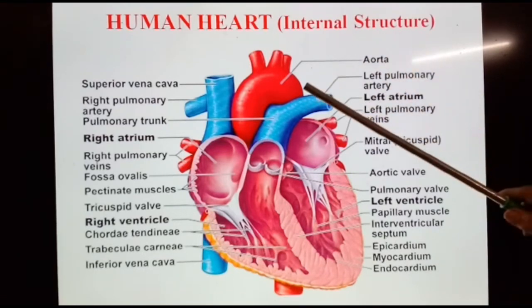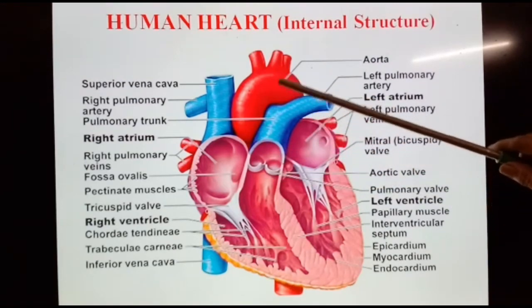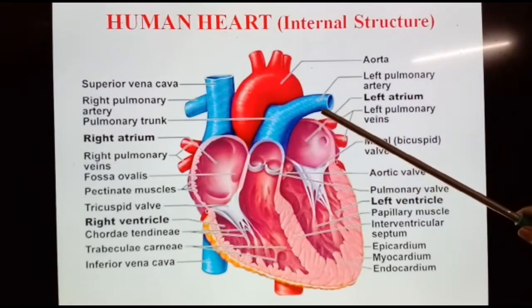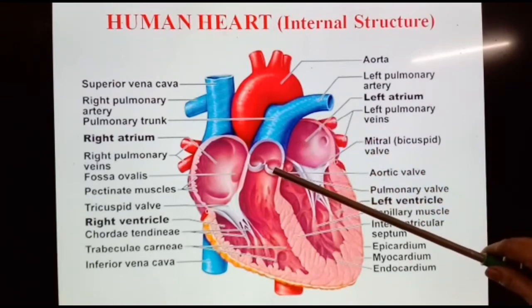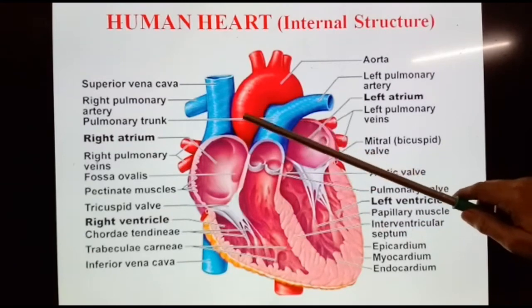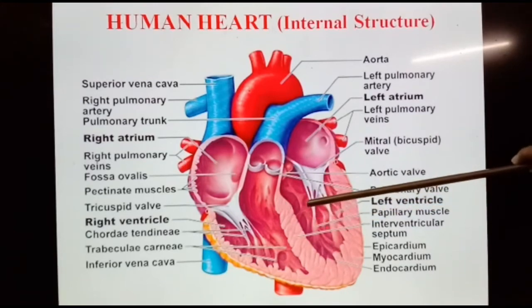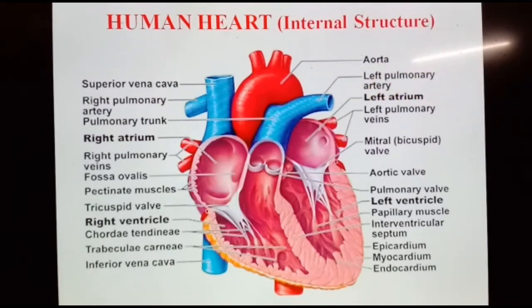Two types of circulation take place inside the human heart: pulmonary circulation and systemic circulation. Pulmonary circulation is the portion responsible for carrying deoxygenated blood away from the heart to the lungs for oxygenation and then bringing oxygenated blood back to the heart. Systemic circulation is the portion where oxygenated blood from the left ventricle enters the systemic aorta and is pumped from the heart to every organ and tissue in the body, and then back again to the heart.